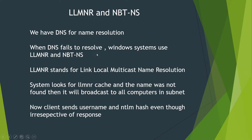When DNS fails to resolve a particular name — suppose Niklil.com that does not exist — Windows systems use LLMNR and NBT-NS services. LLMNR stands for Link-Local Multicast Name Resolution. The system will check the LLMNR cache, and if the name is not found, it will broadcast to all computers in the subnet asking for that name.